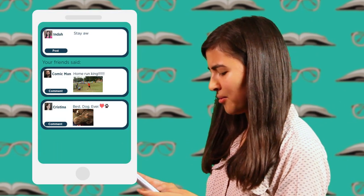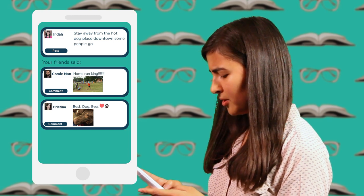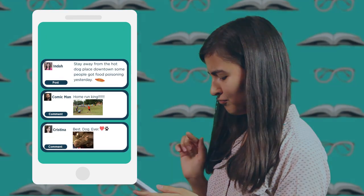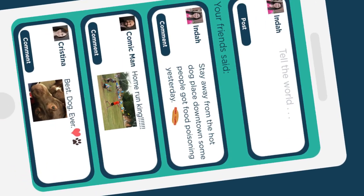Social media is built on impulse. Now sometimes a simple process is exactly what we need. We want to communicate a bit of basic information, quickly and efficiently, so we take advantage of our tech. Stay away from the hot dog place downtown. There are very few, maybe even no, barriers to getting this information out into the open.